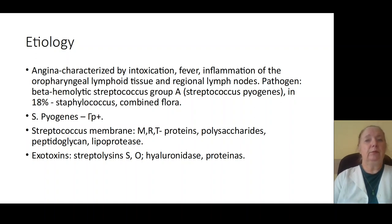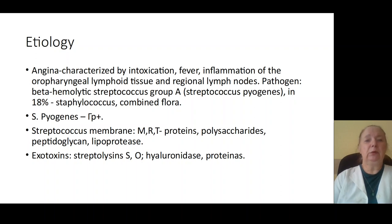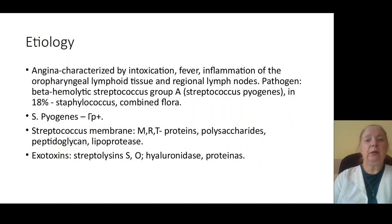Beta-hemolytic streptococcus is gram-positive bacteria. The membrane of streptococcus consists of some antigens — for example, M, R, T proteins, polysaccharides, peptidoglycans, and lipoprotease.